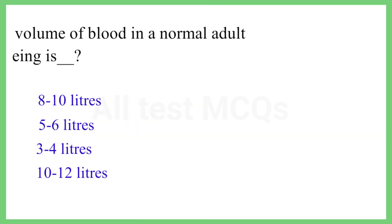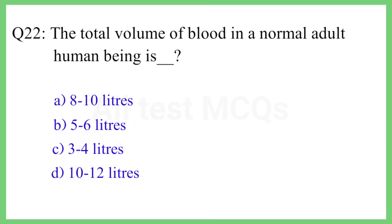Question No. 22. The total volume of blood in a normal adult human being is? The correct answer is Option B: 5 to 6 liters.